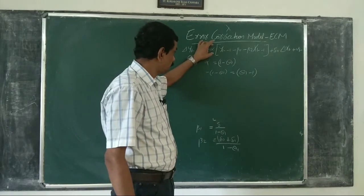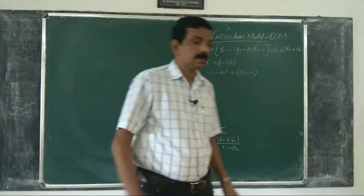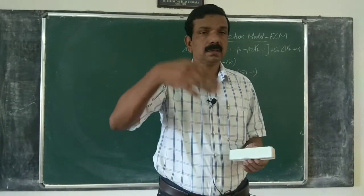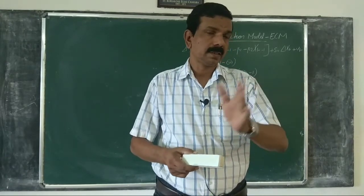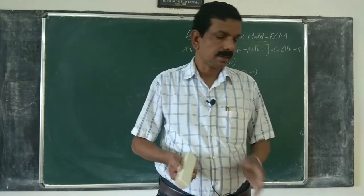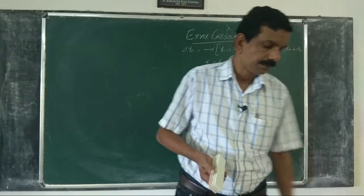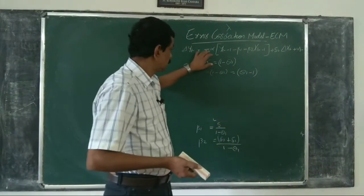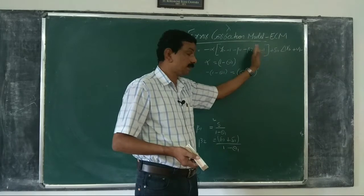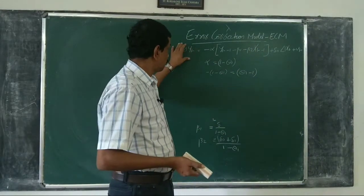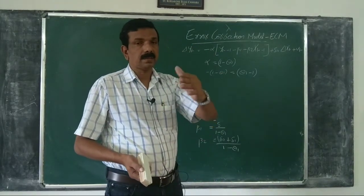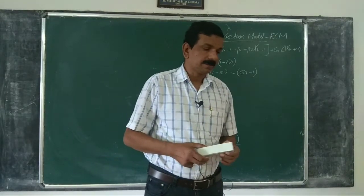The value of alpha gives you an idea about the speed of error correction — how quickly the disequilibrium will be corrected, because it is nothing but the disequilibrium error. If y_t was greater than beta_1 + beta_2 * x_t in the previous period, then delta y decreases and delta y is negative, so Y will decrease and the error will be corrected, and vice versa.